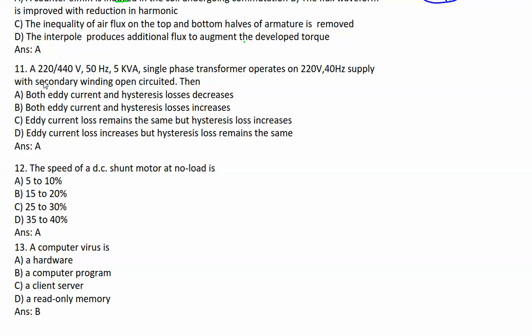A 220/440V, 50Hz, 5kVA single-phase transformer operates on 220V 48Hz supply with secondary winding open-circuited. What will be the losses? Generally, eddy current loss is proportional to Bmax^1.6 × f. In this case, we are reducing the frequency. If Bmax is kept constant - remember this condition - if Bmax is kept constant, the ratio V/f is kept constant.